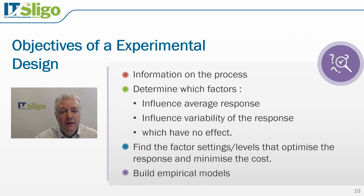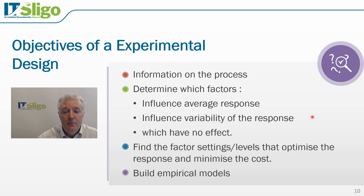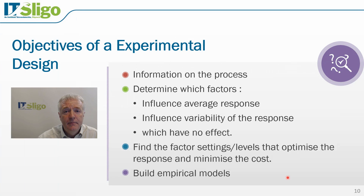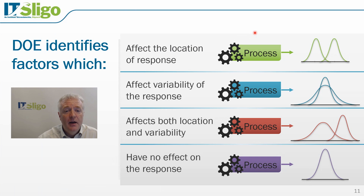The objectives of experimental design are to obtain as much information as possible about the process, to understand the influence that factors have on it, and to identify which factors influence the average response, which affect the variability, and which have no effect. We can then identify the factors and their levels that optimize the response and minimize cost. After achieving this, we build an empirical model — a mathematical model developed from experimentation that explains how the process operates.